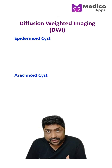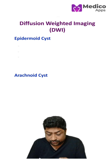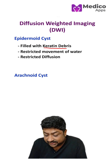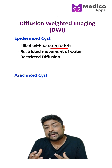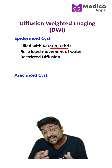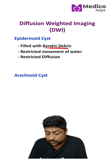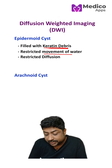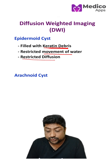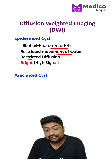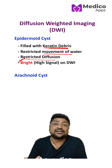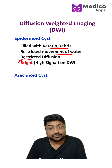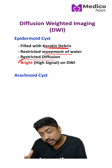When you look at diffusion weighted imaging, if you see an epidermoid cyst, it is filled with keratin debris. This keratin debris causes restriction in the movement of water, and because of this restriction of diffusion, it will present as bright or high signal on diffusion weighted imaging.